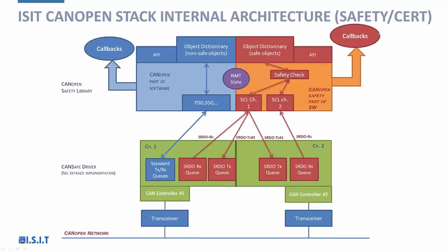The internal architecture of our stack has two parts. The left part handles standard CAN Open protocol services like PDO, SDO, and NMT, with callbacks, API, and a specific object dictionary. The right part handles the safety protocol extension with its own object dictionary containing safe objects, its own API, and its own callbacks. This safety part is based on two safety communication layers. Safety messages are checked and transmitted on both SCL channels — one part of each message must be on each channel. The example shown is based on Model 2 implementation using two CAN channels, meaning two different data link layers and two different physical layers. CAN Open Safety standard references four different communication models.